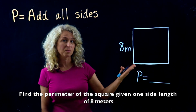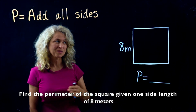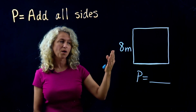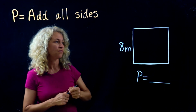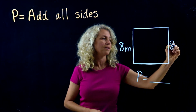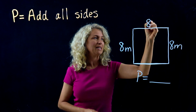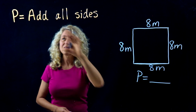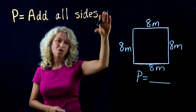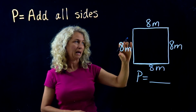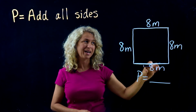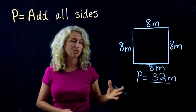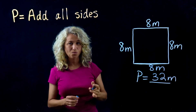So all we have to do is fill in all the missing sides: 8 meters, 8 meters, 8 meters, 8 meters. Now for perimeter, add all the sides all the way around: 8 plus 8 plus 8 plus 8 is 32. 32 meters is your total distance all the way around.